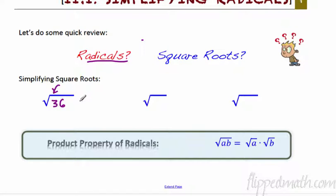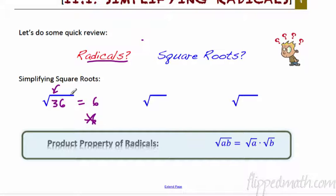So the square root of 36 — if you remember how to do this, you say: what number times itself is 36? And you'll come up with 6. Now, another answer is possibly negative 6. Negative 6 times itself is also 36, but we don't consider that because this is the principal square root. We'd put a negative in front if we meant negative 6. So we don't have to worry about that.